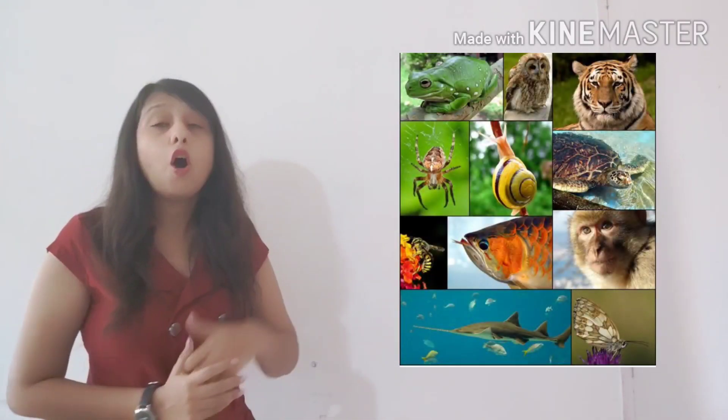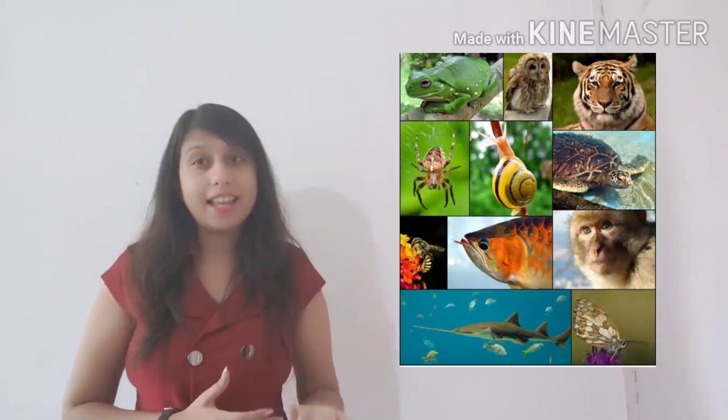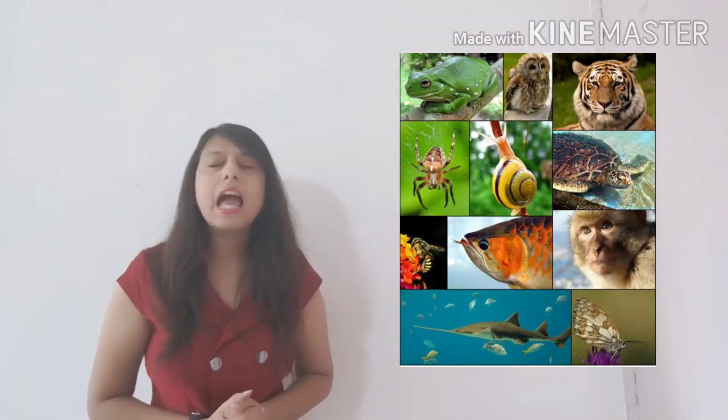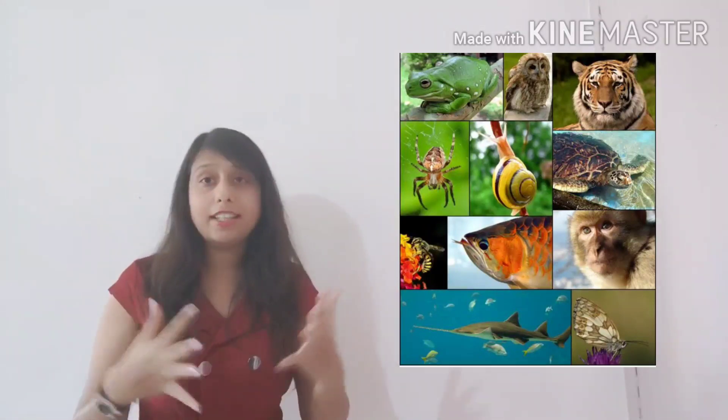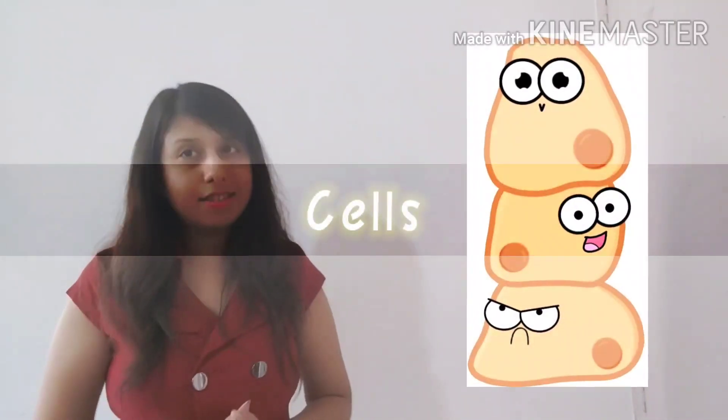we all know that there are so many different types of organisms of different variations, having different shapes and sizes, food habits and habitats. So all of these variations, now what is the similarity between these living organisms?